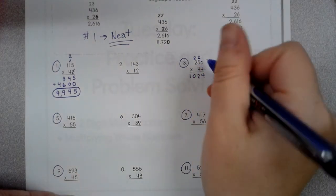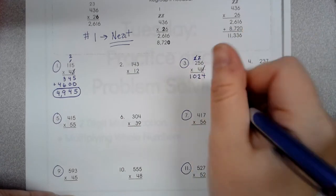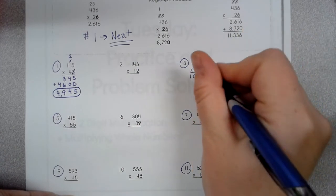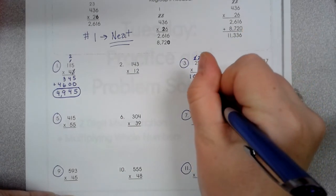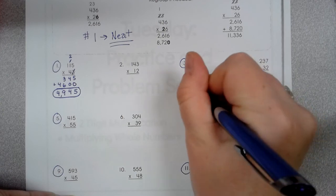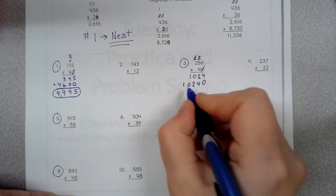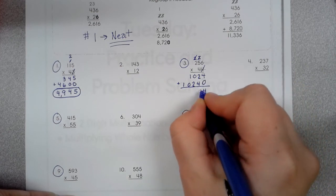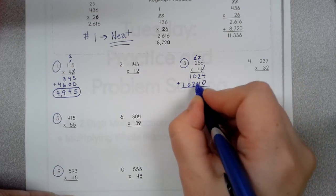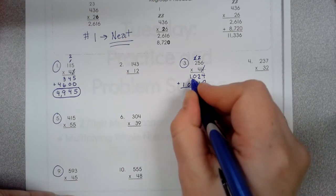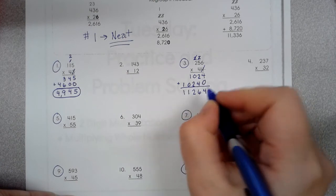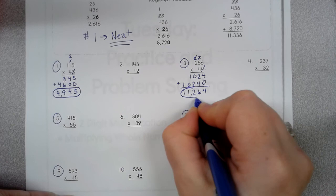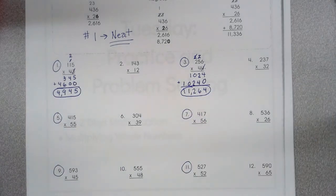So 4 times 256 is 1024. Now I'm going to multiply it by the 40. Add a 0, and you're just going to get the same answer. So 4, 2, 0, 1. Now I add, 4 and 0 is 4, 2 and 4 is 6, 0 and 2, 2, 0, 1 is 1, and another one. 11,264.